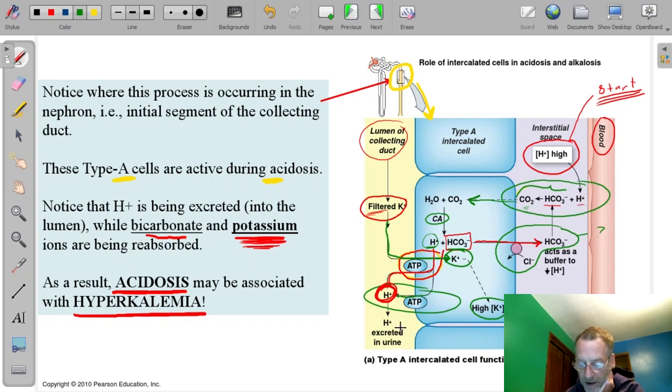But with acidosis, we're getting rid of the hydrogen, and we're retaining the bicarbonate and potassium. So you might remember that the hydrogen and the potassium move in opposite directions. Hydrogen is going out of the cell into the filtrate. Potassium is going back into the blood from the filtrate. So there's the connection between the acidosis and the hyperkalemia.